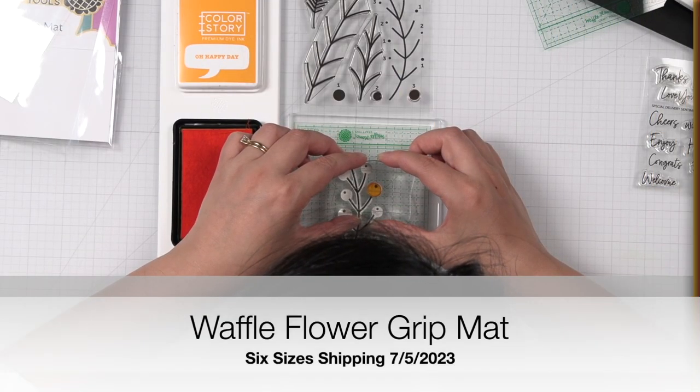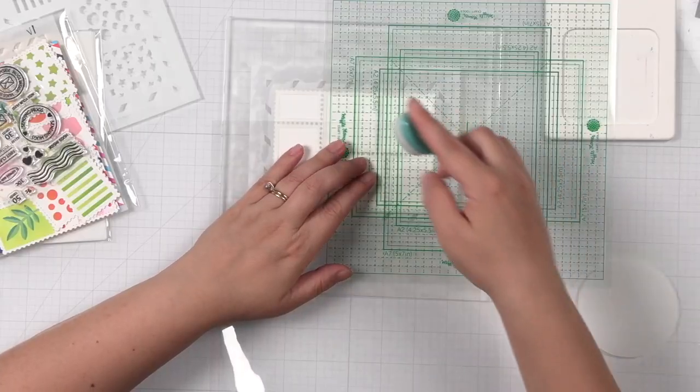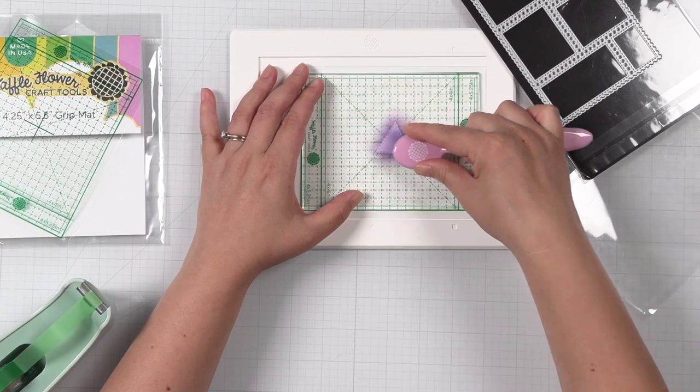The Waffle Flower Grip Mat is designed to gently hold your cardstock in place when stamping, stenciling, ink blending, and more.